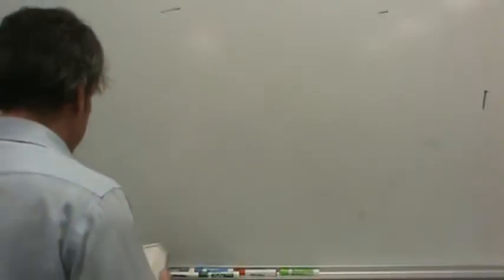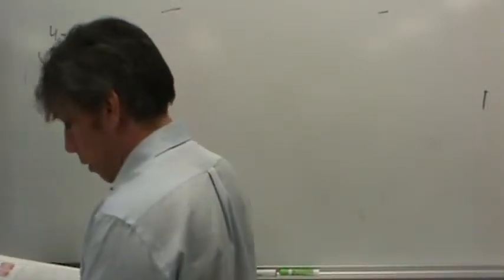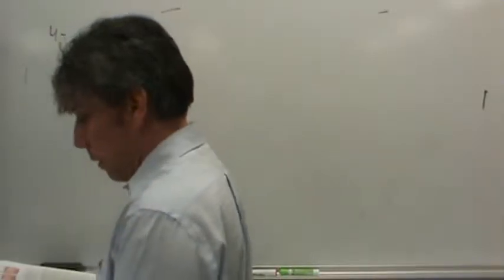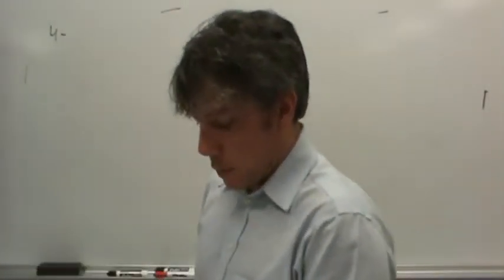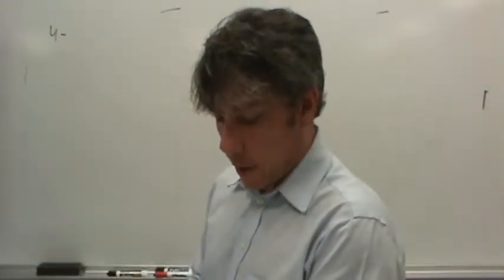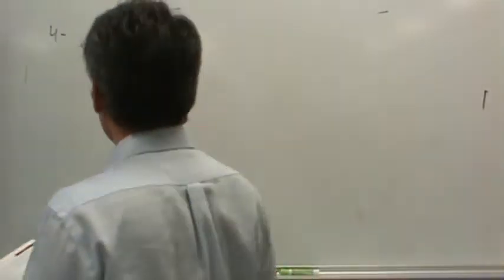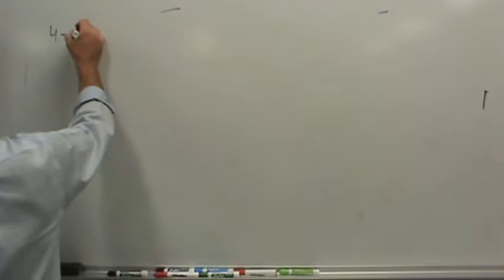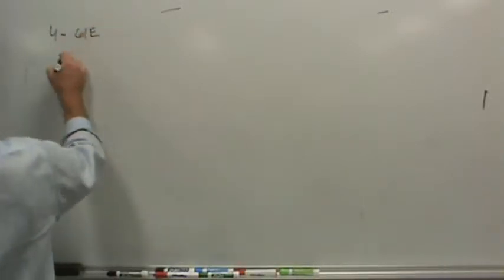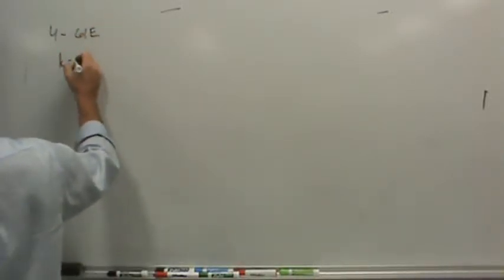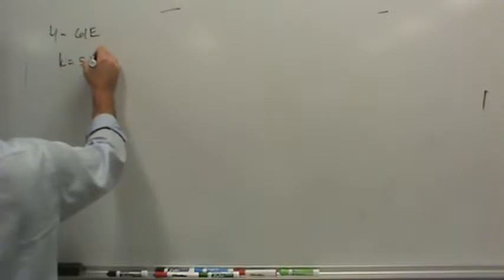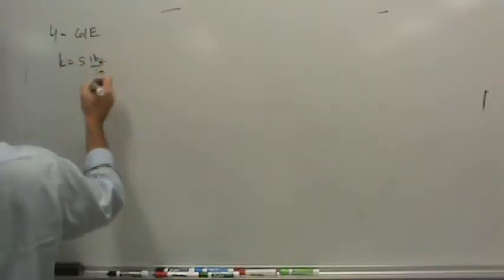This is problem 4-61E. It's on page 201. One cubic foot of air is contained in a spring-loaded piston cylinder device shown in the figure. The spring constant is 5 pounds force per inch. Let's jot this down. It's 61E. Spring constant K is 5 pound force per inch.